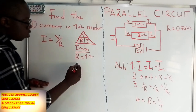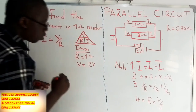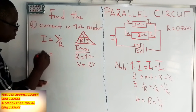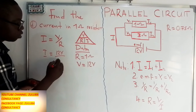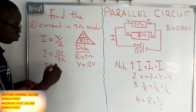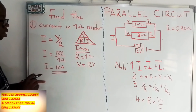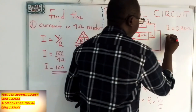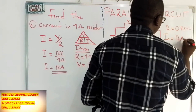The previous question established that voltage is the same at any point in the parallel circuit, so our voltage is 12 volts. Dividing 12 volts by 1 ohm, the current through the first component is 12 amps. So I1 equals 12 amps.